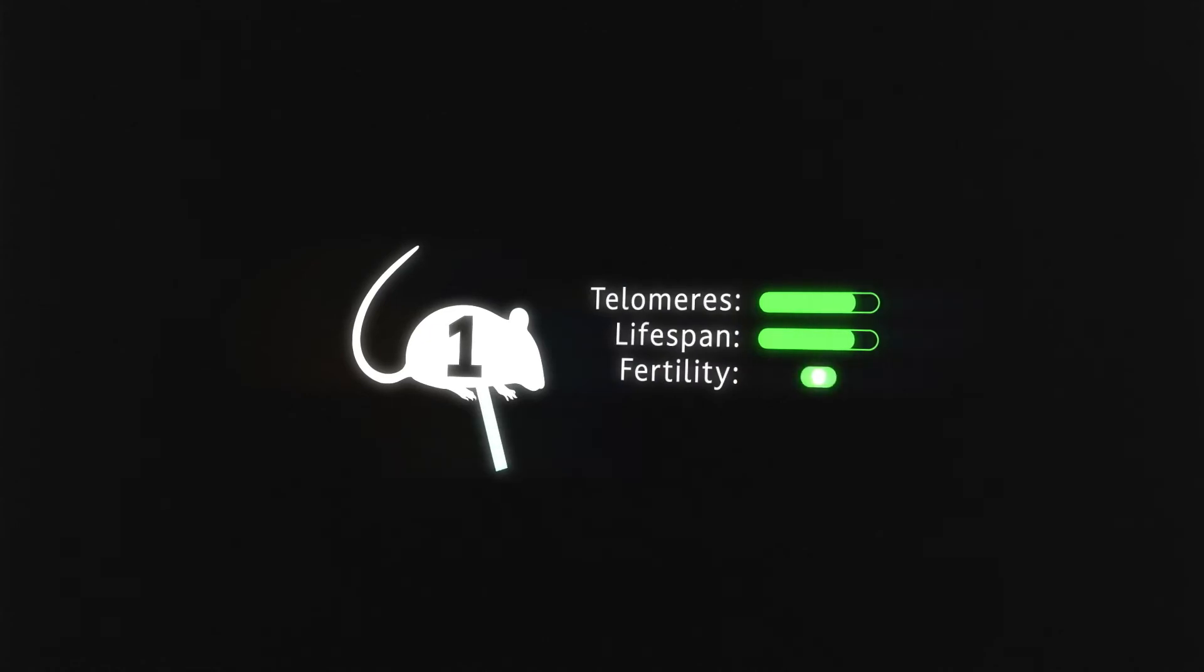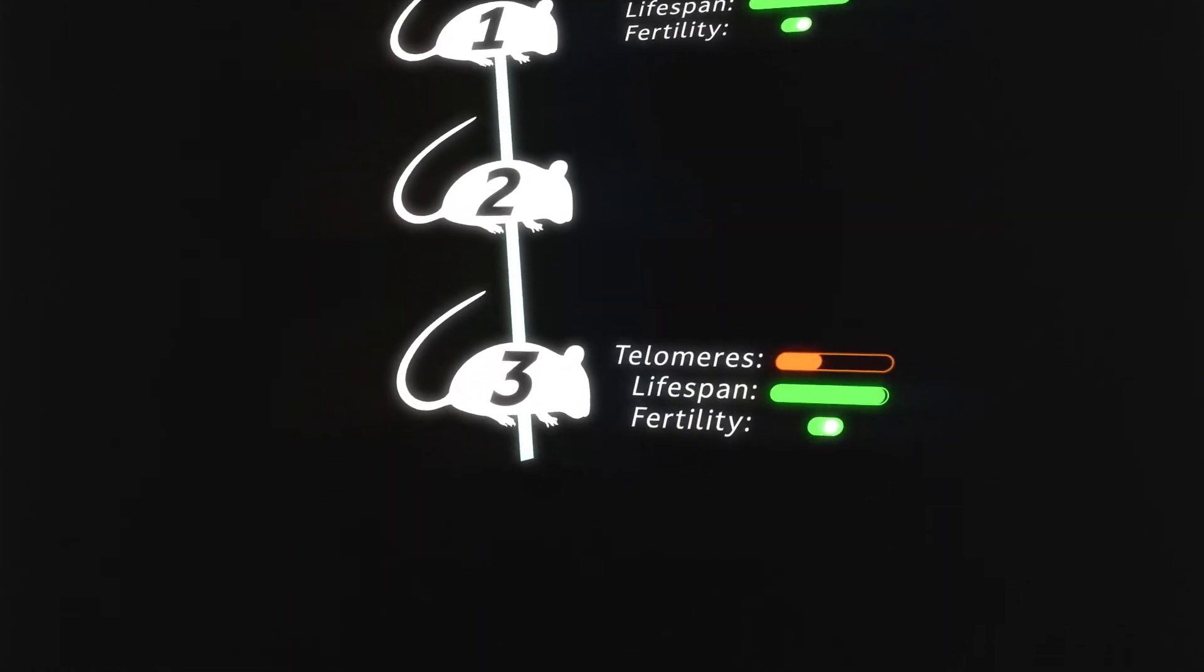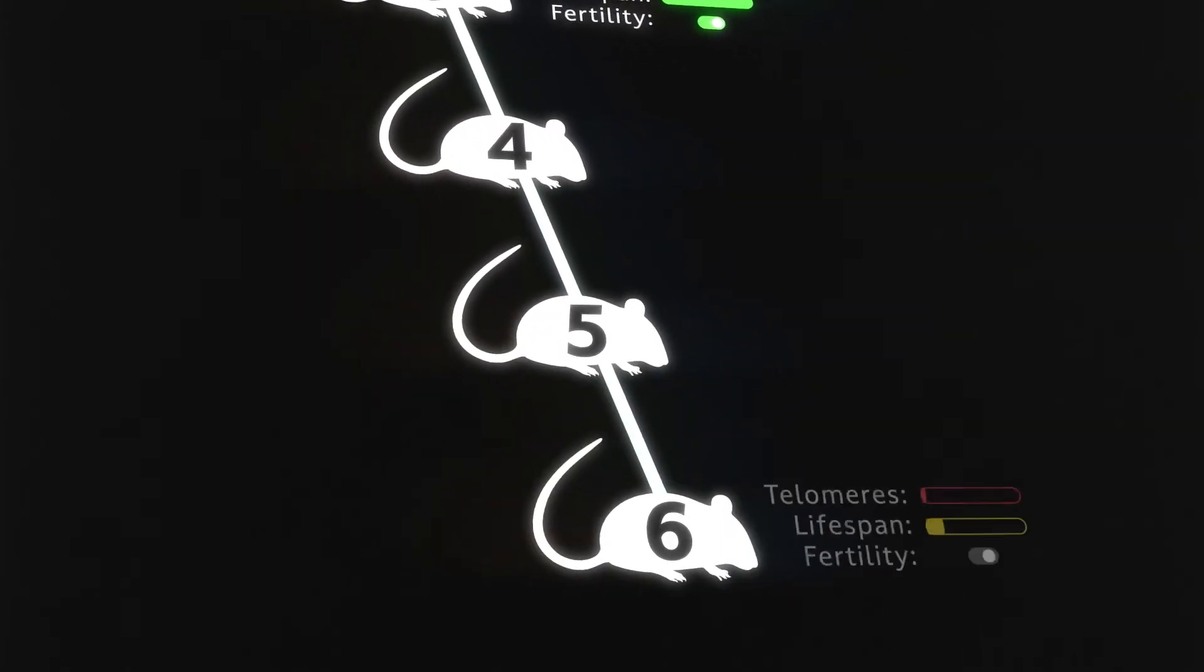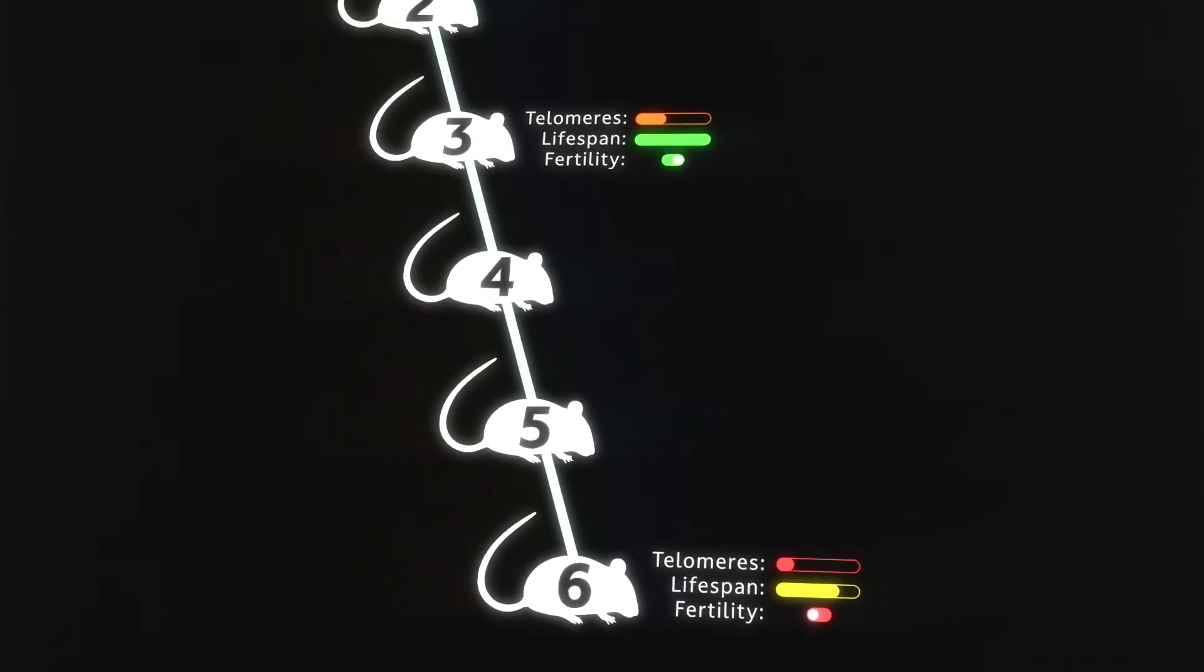Studies have found that without telomerase, lab mice will have shorter telomeres with each generation. After four to six generations, the mice become infertile and die early, with symptoms that resemble those seen in older people.